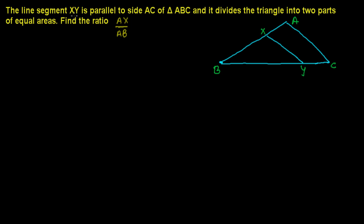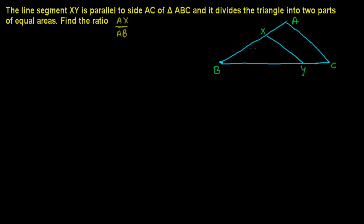The line segment XY is parallel to AC. So this line segment XY is parallel to the side AC of triangle ABC, and it divides the triangle into two equal areas. So the area of triangle XBY is half of triangle ABC's area, and we need to find out the ratio of AX over AB.